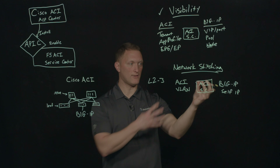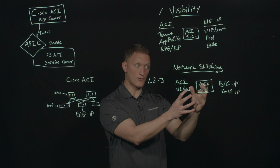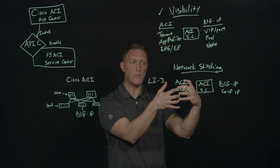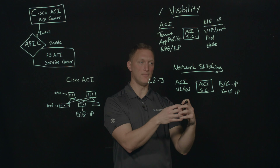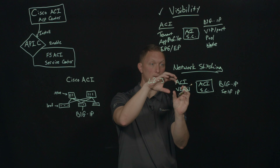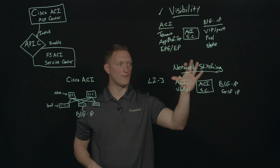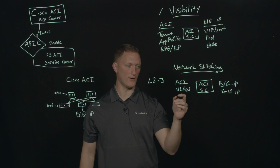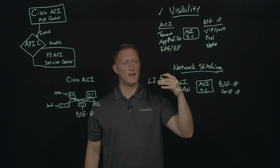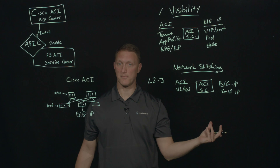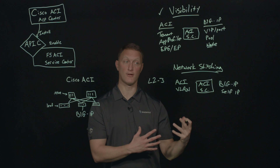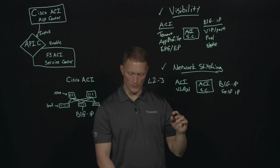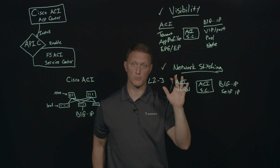So this app is able to discover and stitch together the networking components between ACI and Big IP. This is also supported on several form factors: VCMP, VE, and the hardware appliance itself. So this network stitching capability is available across all the different form factors — that's a really powerful solution.